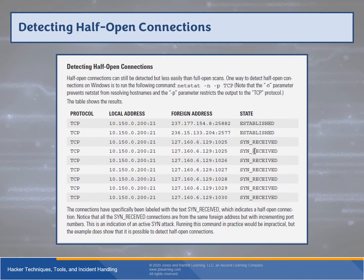Looking for half-open connections — the half scan or stealth scan — it's important to understand what netstat with the -n -p parameter output looks like. We can see in the table the first two entries say 'ESTABLISHED.' Looking at the last seven or so, we see 'SYN_RECEIVED' — it's sitting there with a foreign address trying to climb through ports 25, 26, 27, 28, 29, 30. We have a half-open connection with increasing ports all from the same source, which definitely seems like an active SYN attack. These connections are computer responses — much faster than we'd normally see — but in general this shows we can look at connections and identify things that are not quite right.